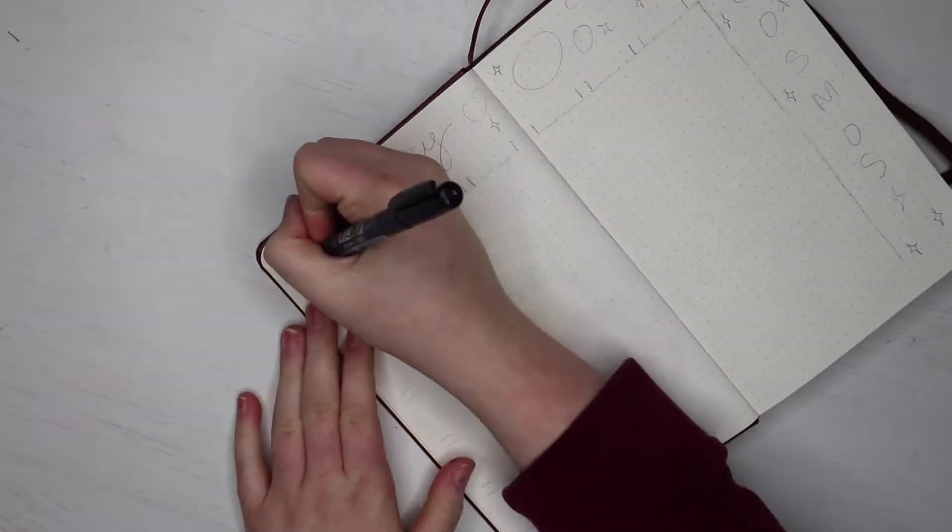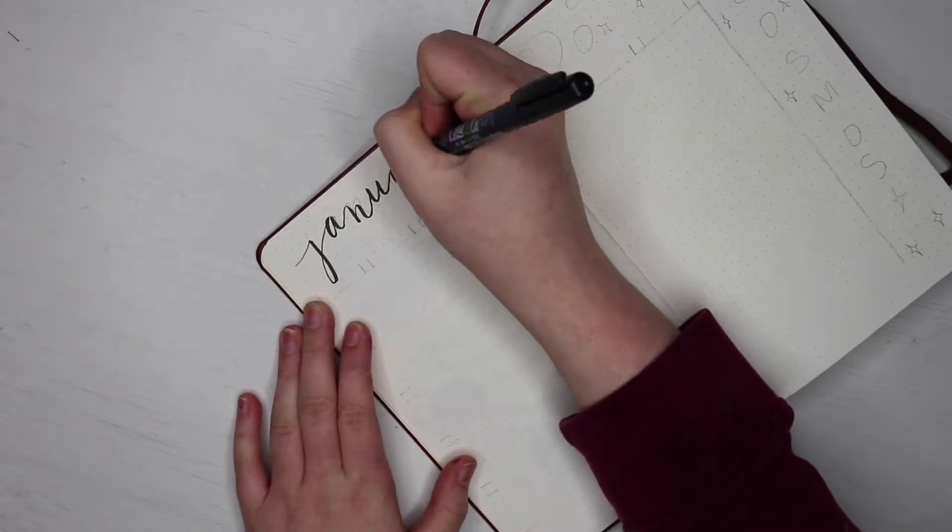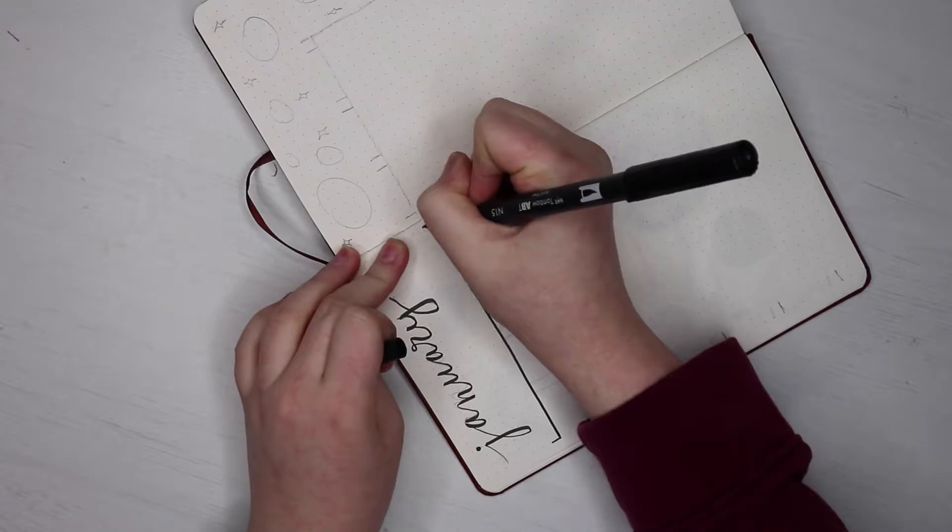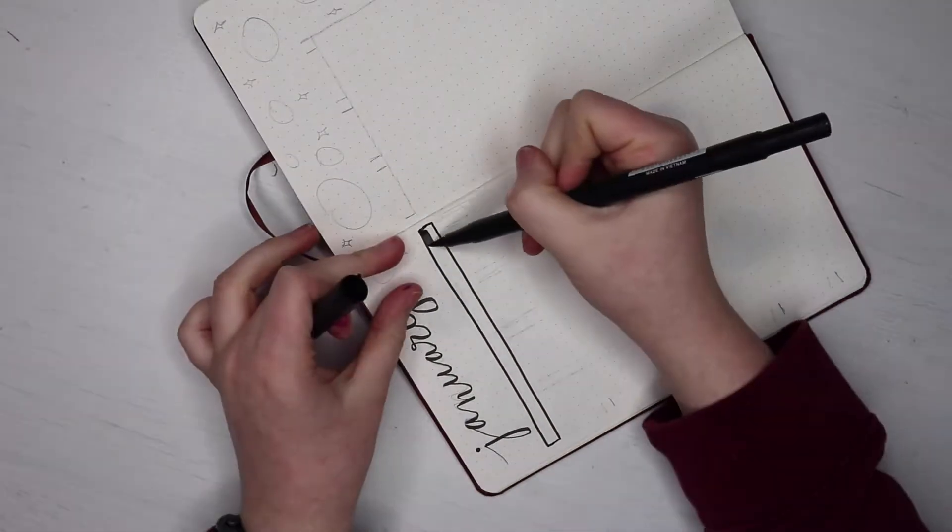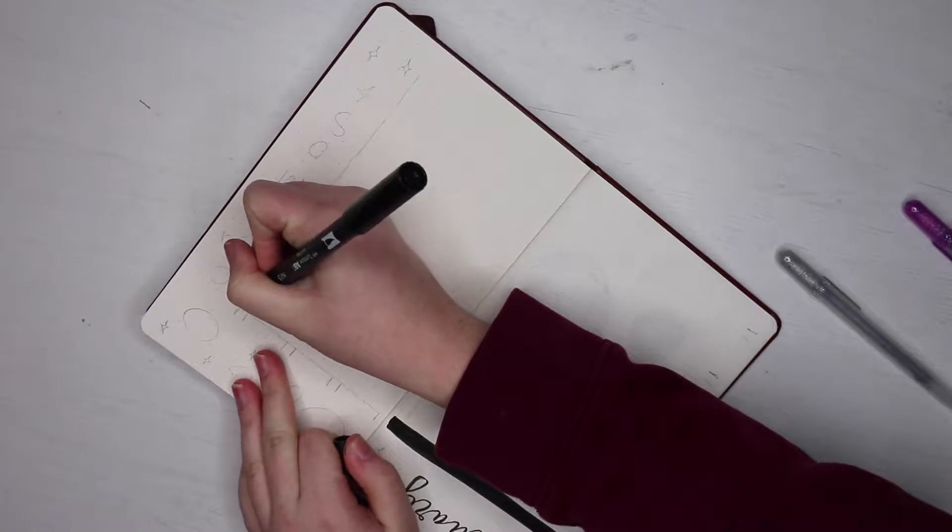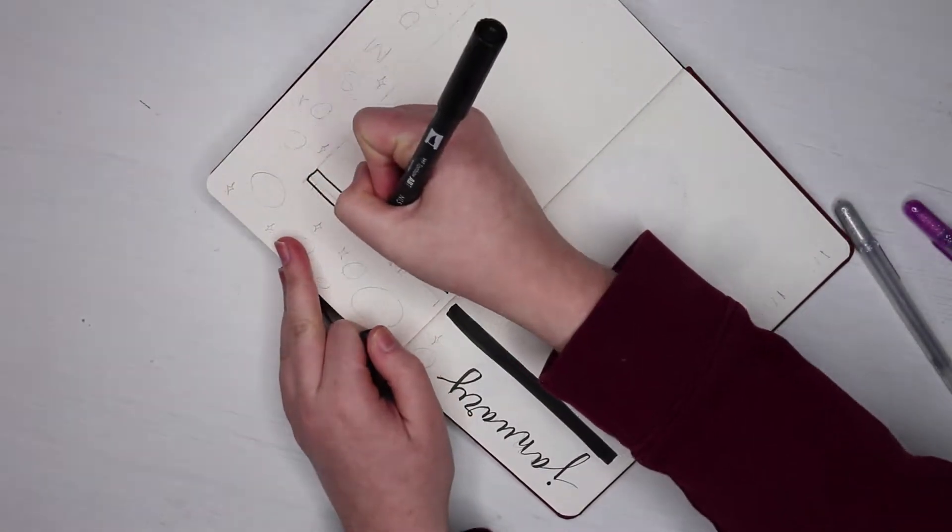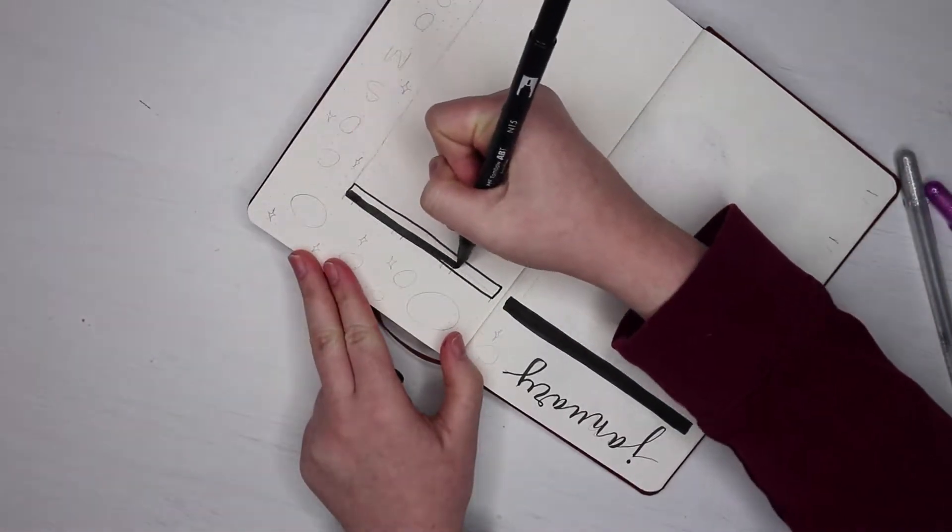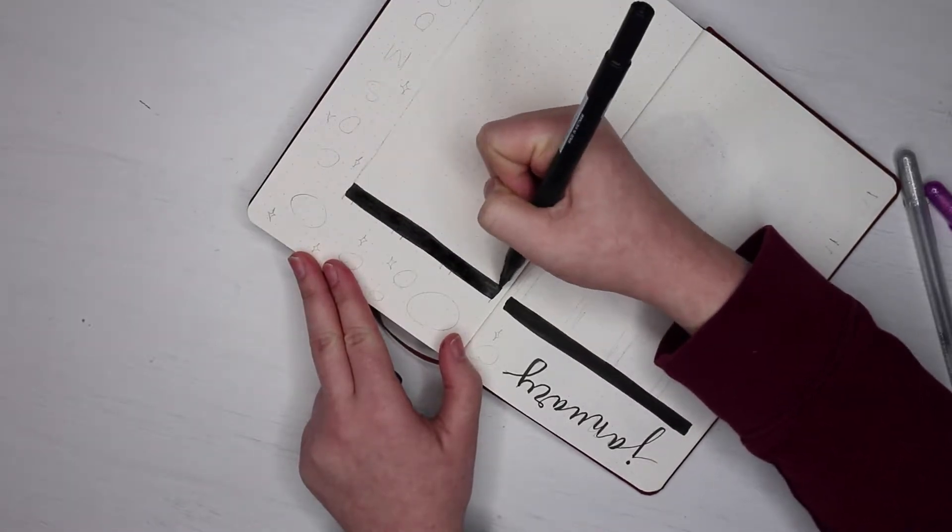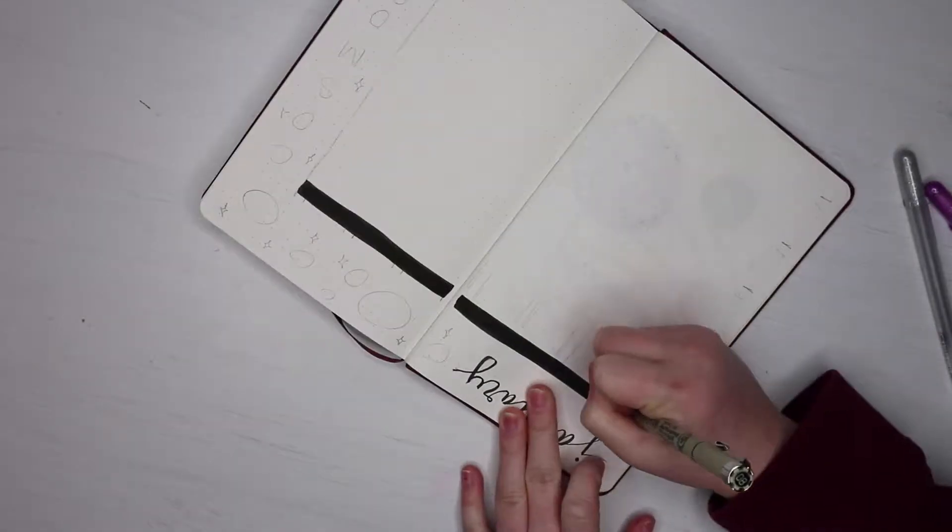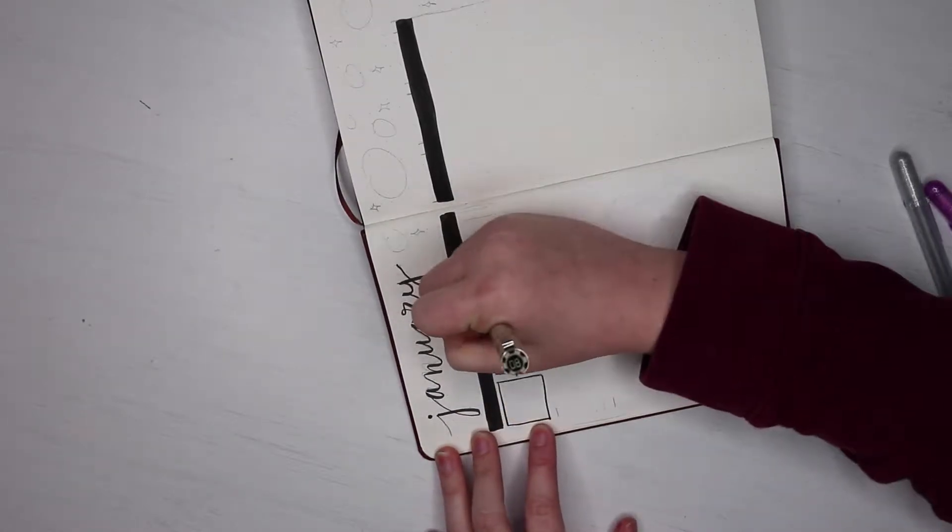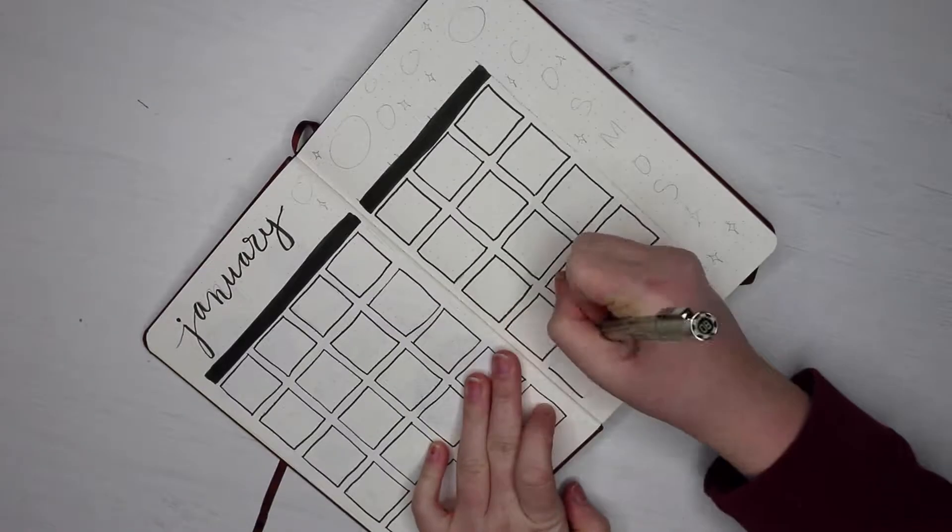So moving on to my monthly spread, I'm just going to be taking that same Tombow Fudenosuki and calligraphying in January. And then I'm trying to be a little bit more creative with my spreads because I kind of let it stop being creative near the end of the year. So I'm going to be blacking out where I'm going to put Monday, Tuesday, Wednesday, Thursday, etc. at the top and then I'm going to be writing it in with a white gel pen. So now I'm just going to be making the boxes for the month. And these are just going to be 5x5 little cubes. Super simple. So I would count the boxes. Don't make them 5x5 if your journal is bigger or smaller than mine.